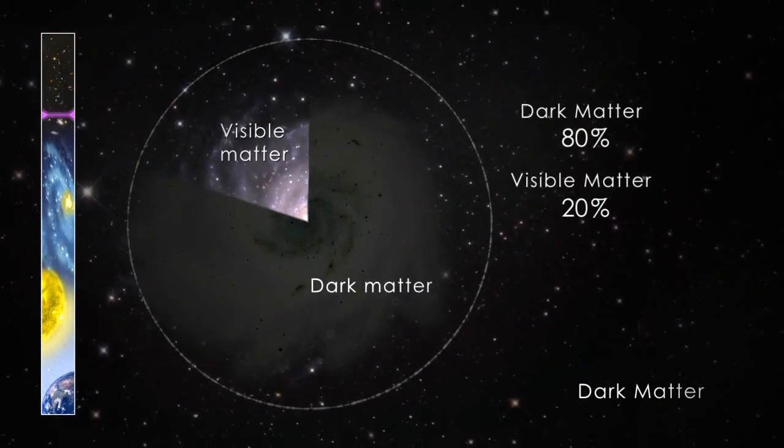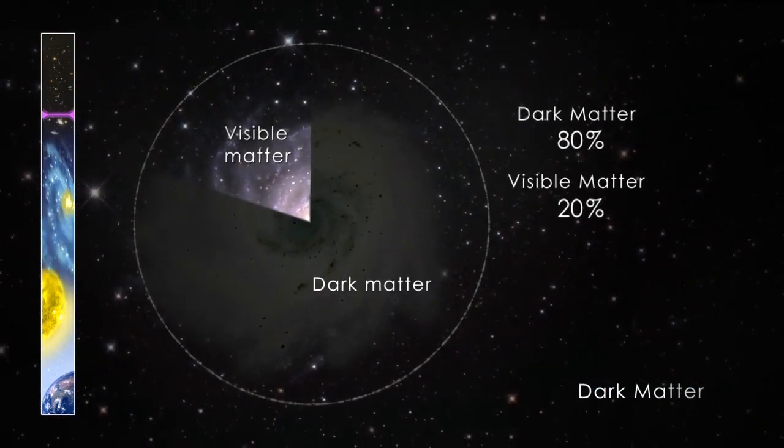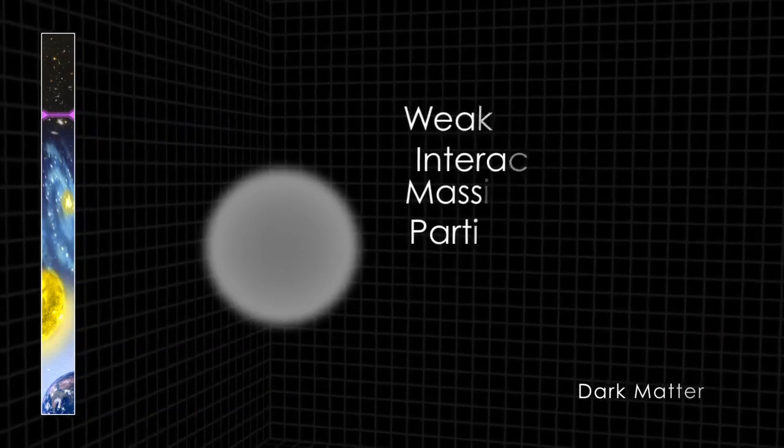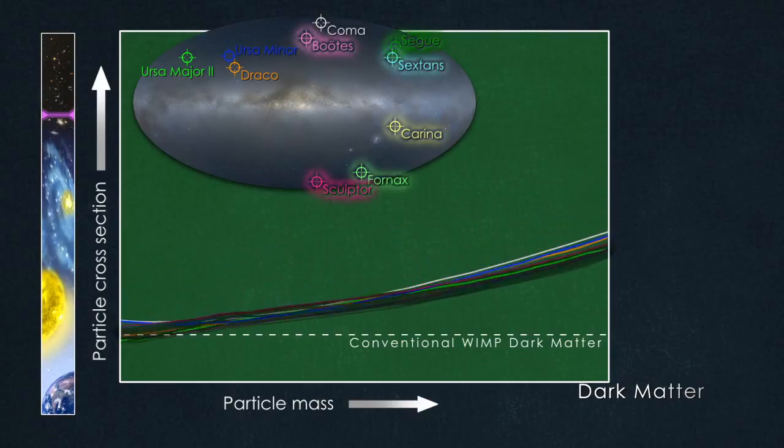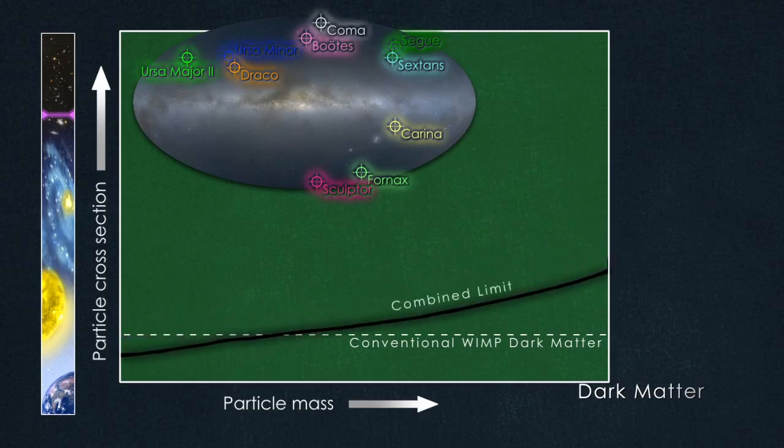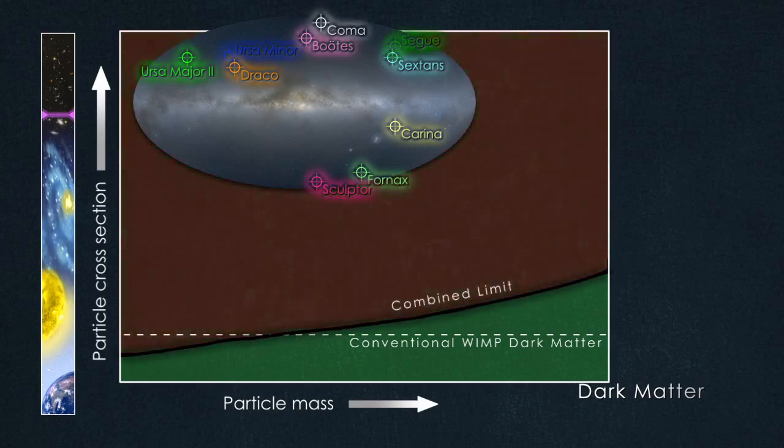Two years of scanning the sky with Fermi's Large Area Telescope have set the strongest limits yet for WIMP dark matter. The longer Fermi operates, the better its ability either to box in the nature of dark matter, or to find actual evidence of what it is.